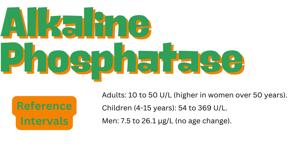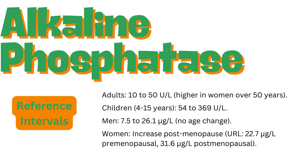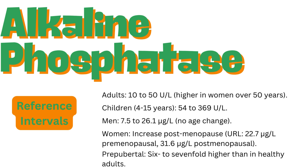Men: 7.5 to 26.1 micrograms per liter, no age change. Women: increase postmenopause — upper reference limit 22.7 micrograms per liter premenopausal, 31.6 micrograms per liter postmenopausal. Prepubertal children have BAP levels 6 to 7-fold higher than in healthy adults.